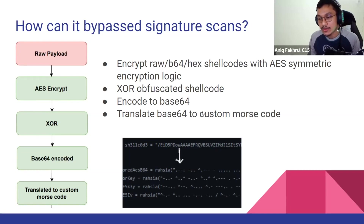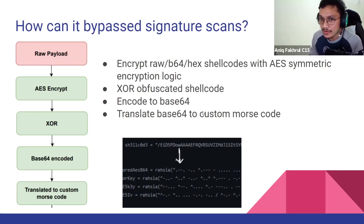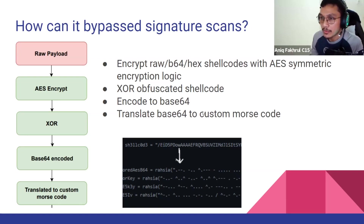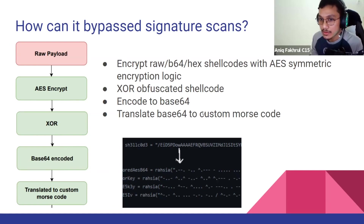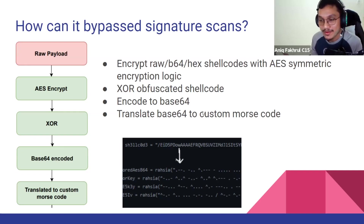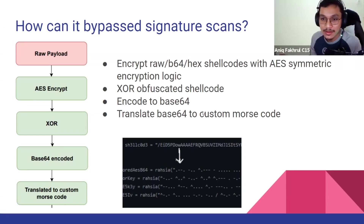What does Sharpener do in the background to encrypt the raw shellcode? The first layer is AES encryption — it accepts various formats of shellcode: raw shellcode, Base64 shellcode, and hex shellcode. After AES encryption it performs XOR. Since XOR output is in byte form rather than string form, I then convert it to Base64. However, some AV vendors can still detect Base64 when it is too long, which can cause detection.